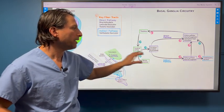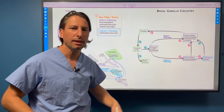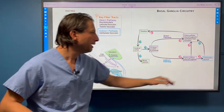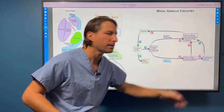When we think of a stroke in the subthalamic nucleus, this is hemiballismus, these wild ballistic flinging movements if we have a stroke in the subthalamic nucleus.